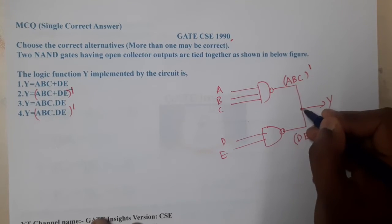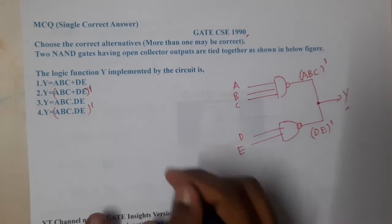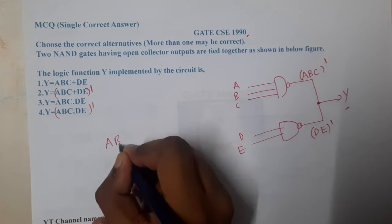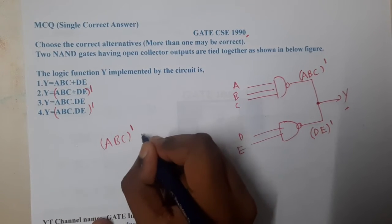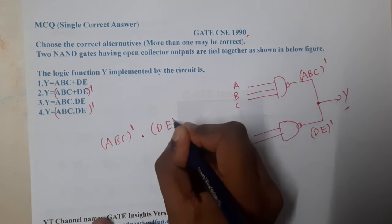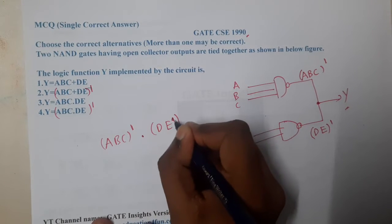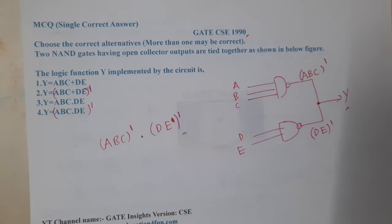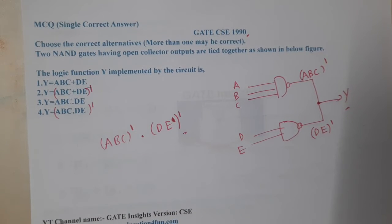So here if we are collecting the data you will get ABC whole complement into DE whole complement. So if you observe carefully, is there any option matching guys? The answer is no, there is nothing matching.